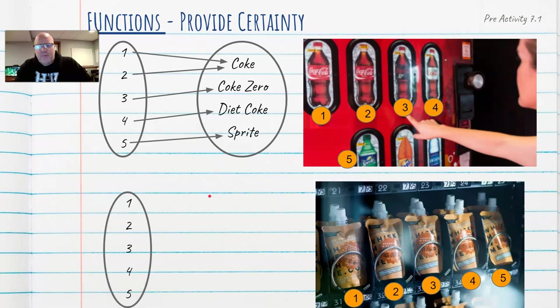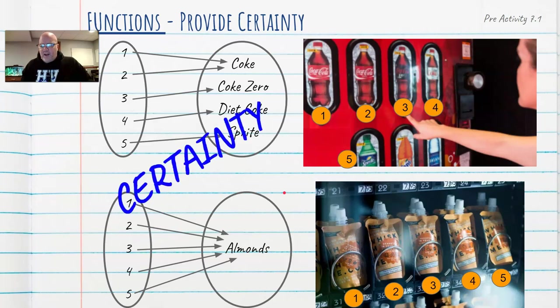So again, the same rules apply. When I hit button one, do I know exactly what I'm going to get? I do. And same with button two, same with button three, same with button four. But now let's reverse this process. So here we have certainty. A hundred percent. We know what button one is going to give me.